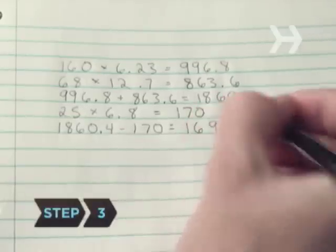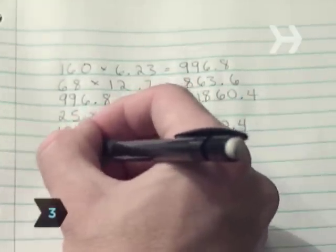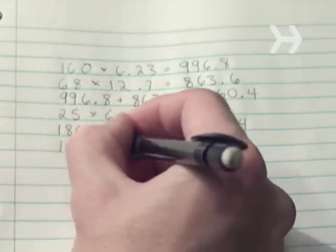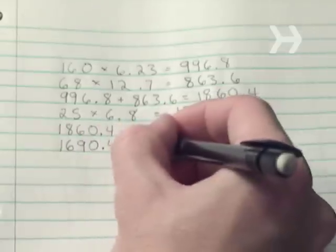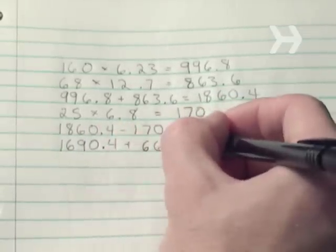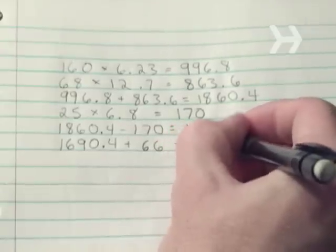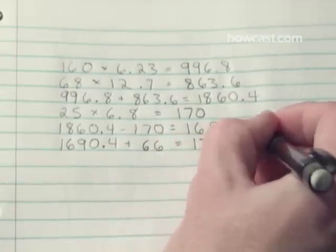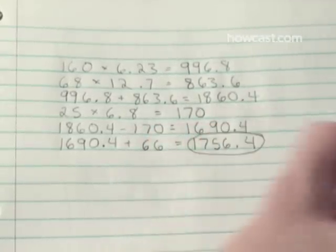Step 3. Calculate your basal metabolic rate if you're a man by multiplying your weight by 6.23. Add the product of your height in inches multiplied by 12.7. Subtract your age in years multiplied by 6.8, and then add 66.